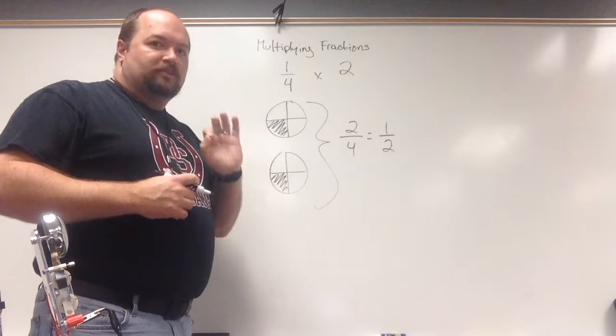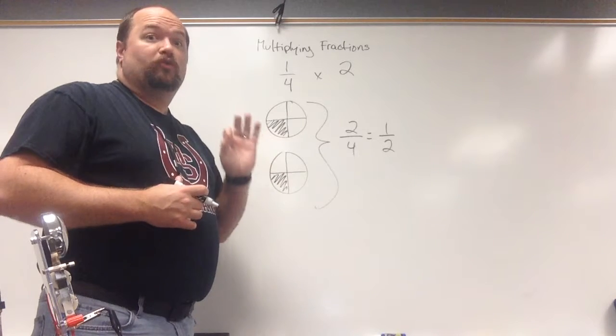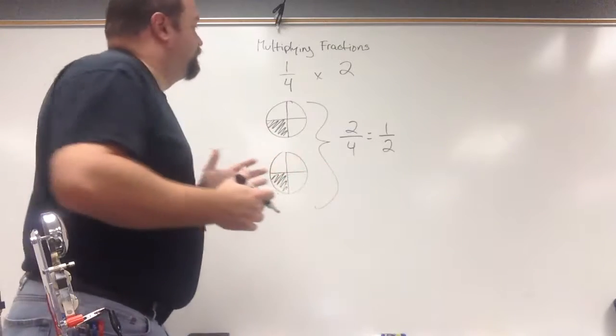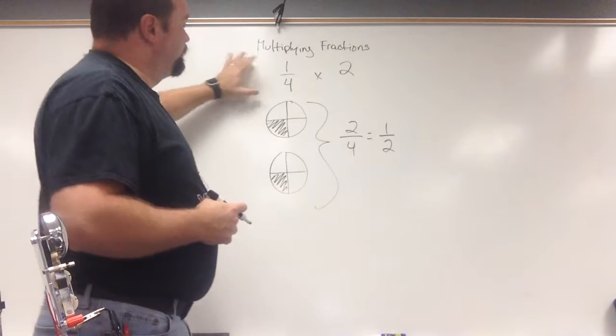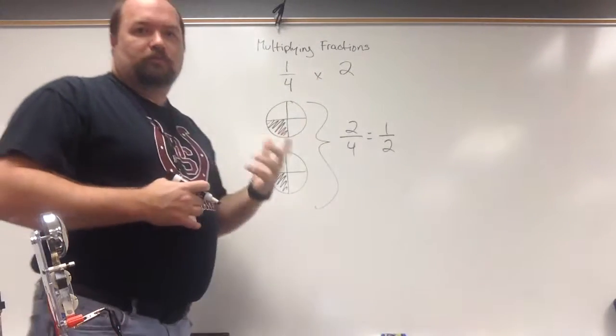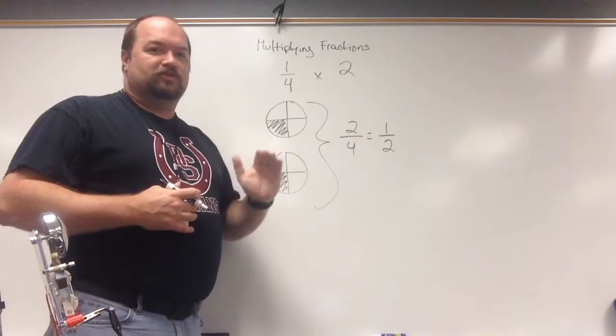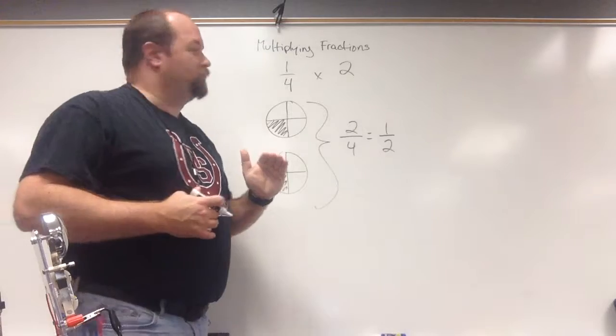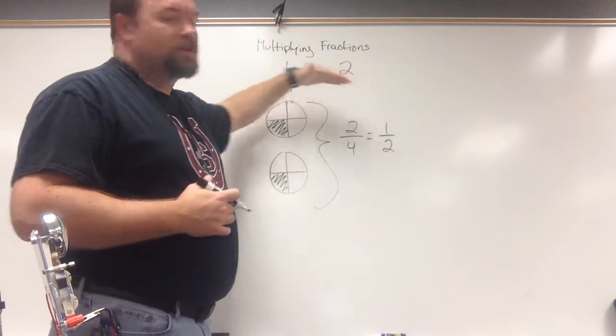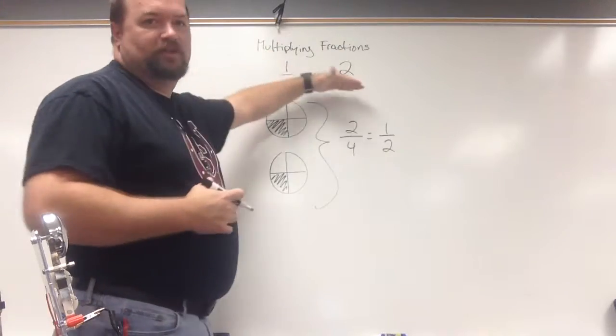Because now I'm going to show you the math behind this, and again guys, this is so very easy. You're going to look at this and be like, really, that's it? And it really is, that's it. So when we're multiplying, now we're looking up here at one-fourth times two. When we're multiplying, all we have to do is we're just going to multiply across numerator to numerator, denominator to denominator.